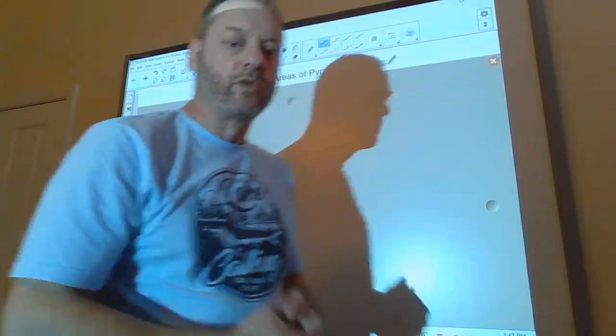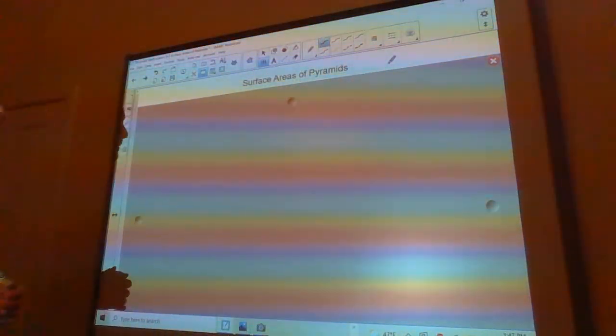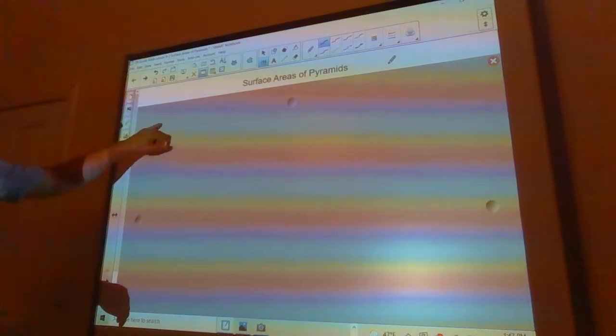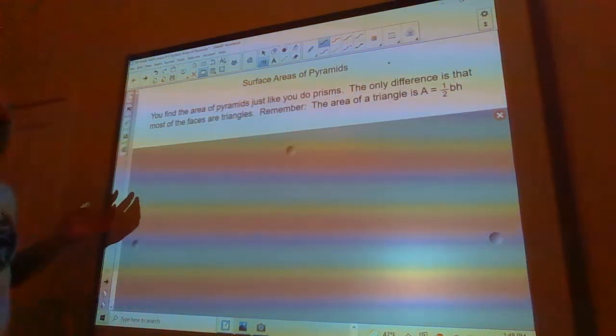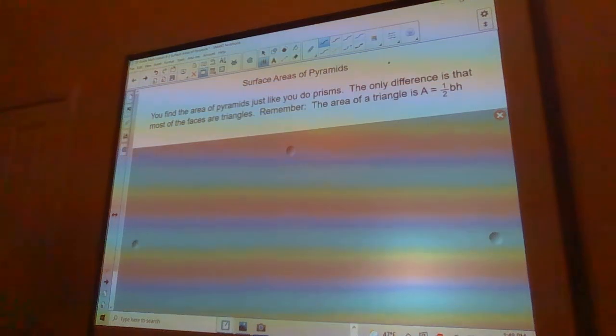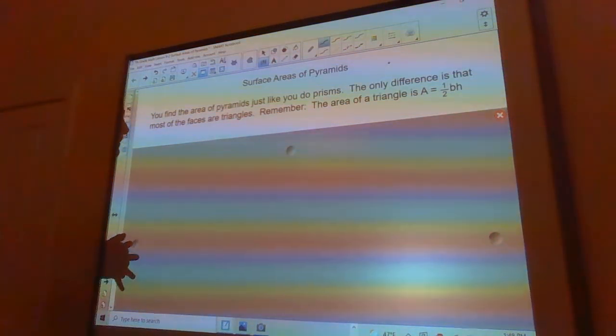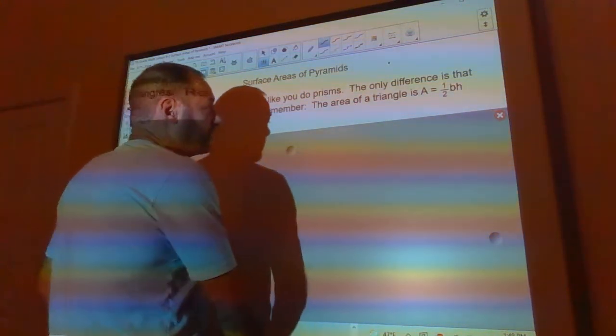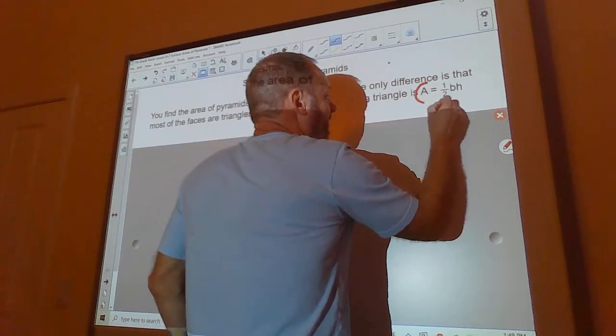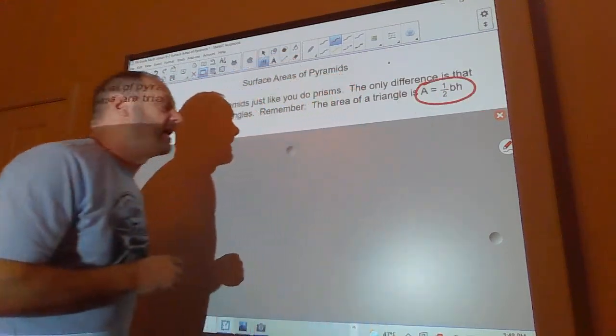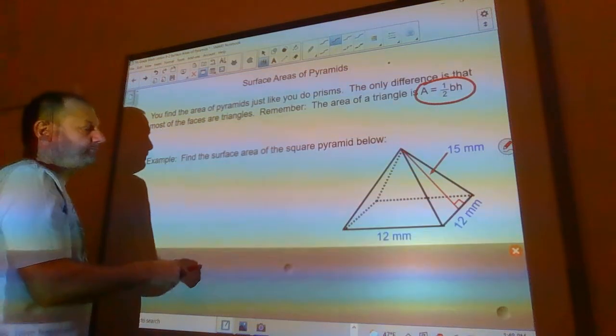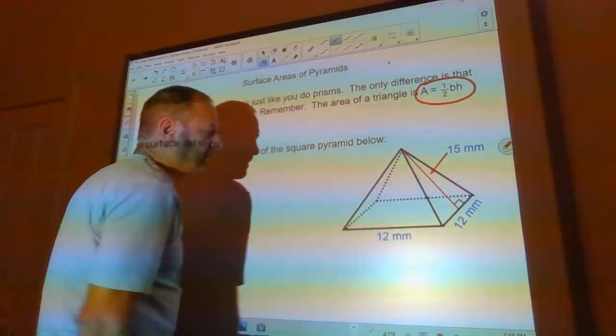Hey guys, today I got a really short video for you on surface areas of pyramids. You find the surface area of pyramids just like you do prisms. The only difference is that a lot of the faces of a pyramid are triangles, so you need to make sure you know the area formula for a triangle: half the base times the height. Here we've got a square pyramid.